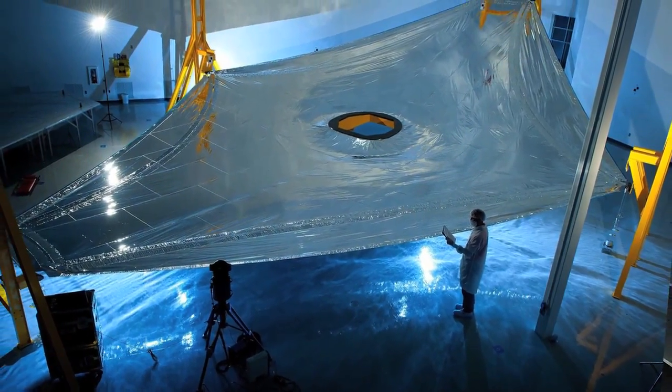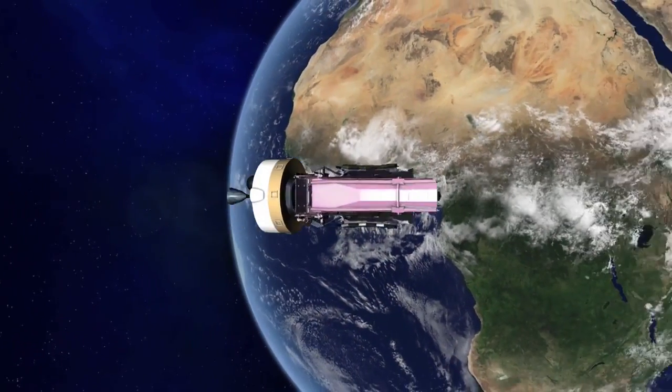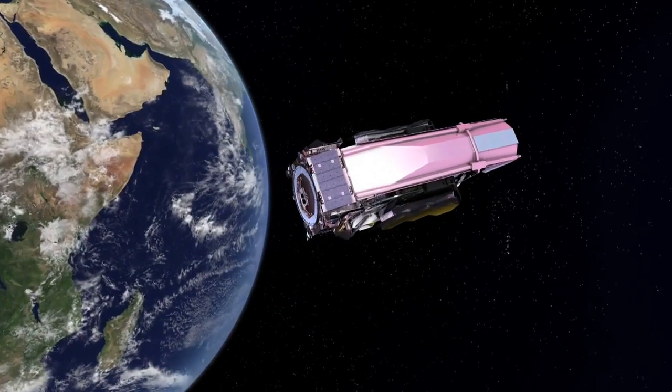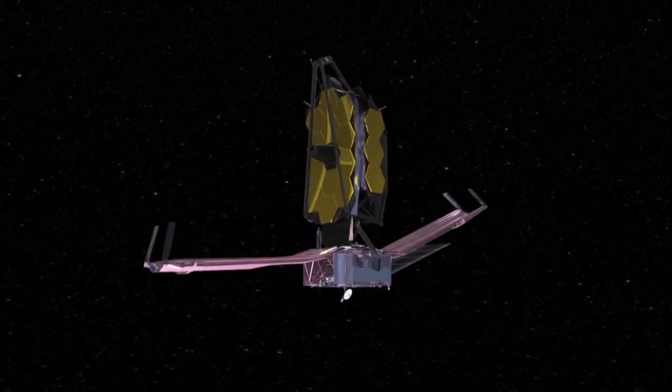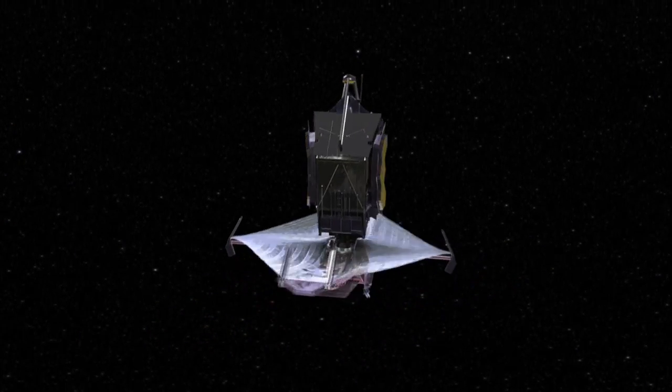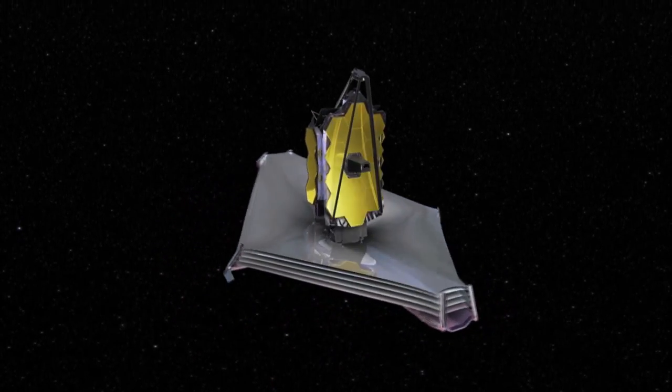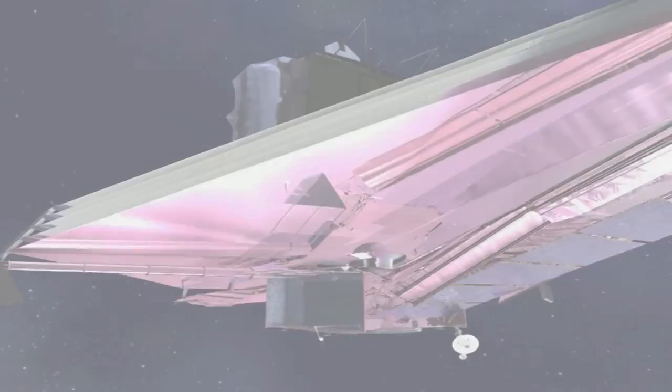Webb will be much larger than Hubble, so large that it must be folded to fit into its rocket for launch. Once in orbit, one million miles from Earth, Webb will transform into an observatory with a tennis court-sized sunshield and 21-foot-wide primary mirror.